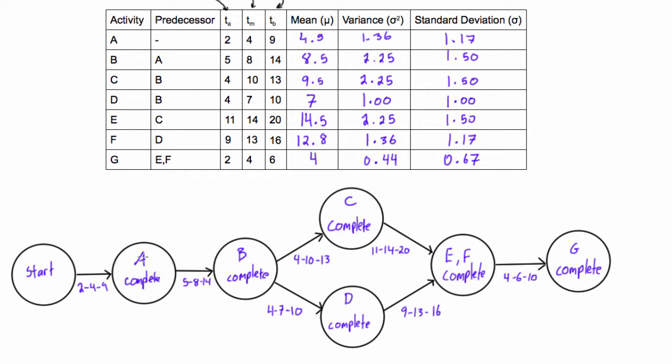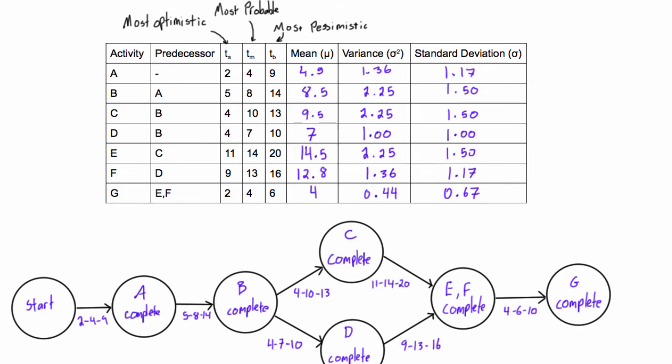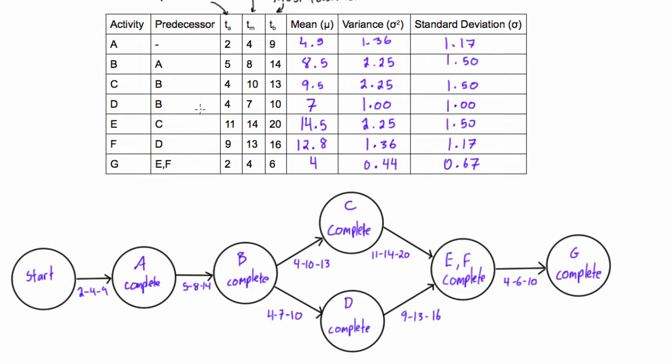Basically all we had here is you label the nodes for where activities are completed and then you put in the most optimistic, most probable, and most pessimistic time under each arrow for each activity. Now if you're doing a problem like this in a university class or something like that, you may either be given a table of dependencies or you may be given a network diagram that's already filled out with this much information.